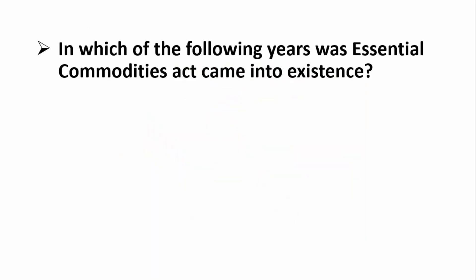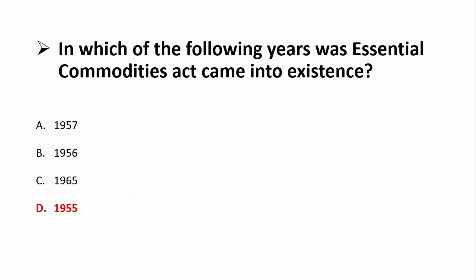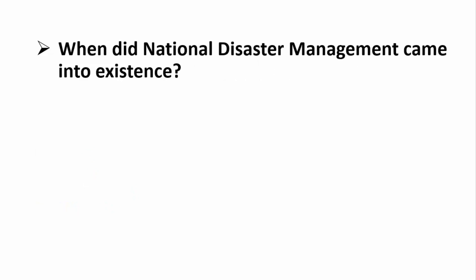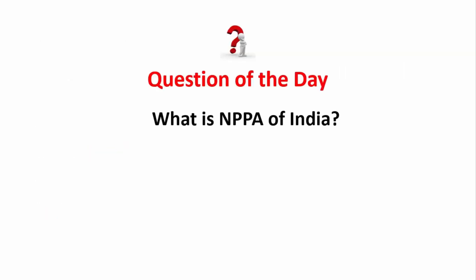Quiz time: Question 1 — In which year did the Essential Commodities Act come into existence? Options: 1957, 1956, 1965, or 1955. The correct answer is 1955. Question 2 — When did the National Disaster Management Act come into existence? The answer is 2005. The Question of the Day: What is NPPA of India? Write your answer in the comment section — it stands for National Pharmaceutical Pricing Authority. The correct answer will be discussed in the next session. Thank you and Jai Hind!